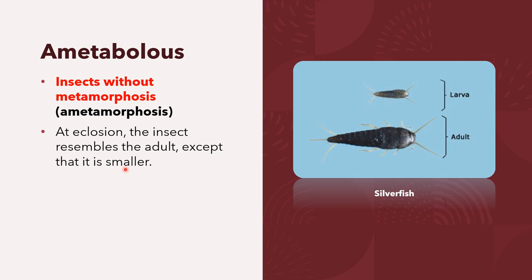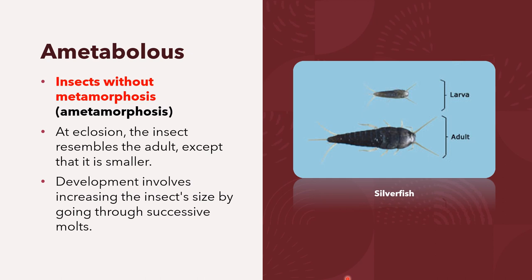At eclosion, the insect resembles the adult except that it is smaller. Eclosion is the emergence of an adult insect from its pupal case or the hatching of an insect larva from an egg. Development therefore simply involves increasing the insect's size by going through successive molts. An example of an ametabolous insect is the silverfish.